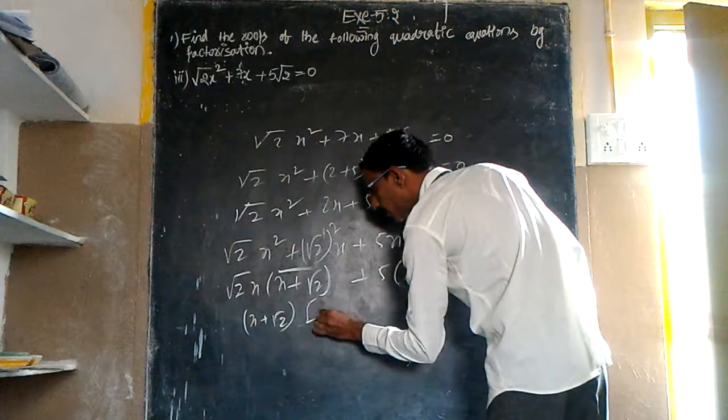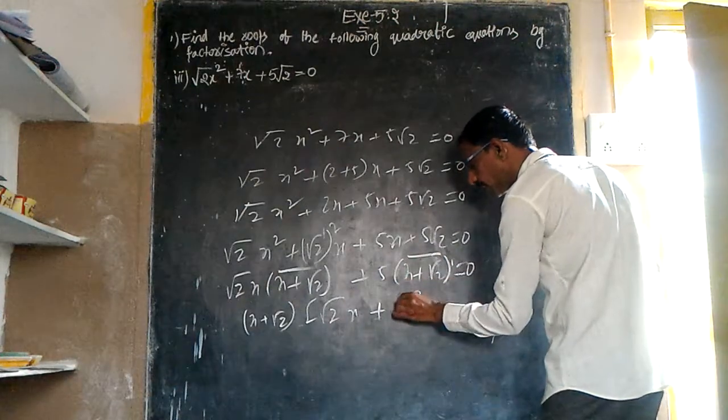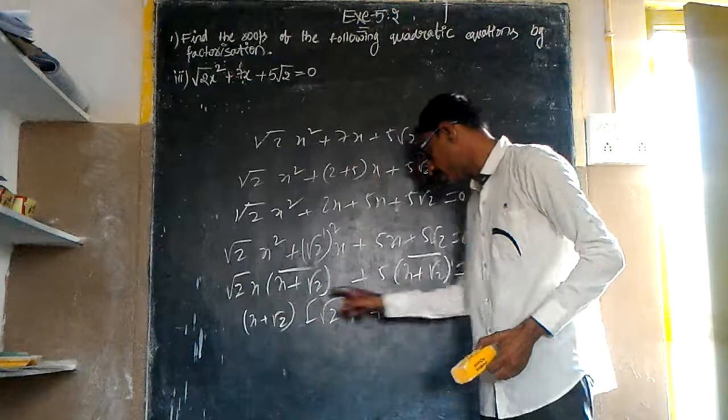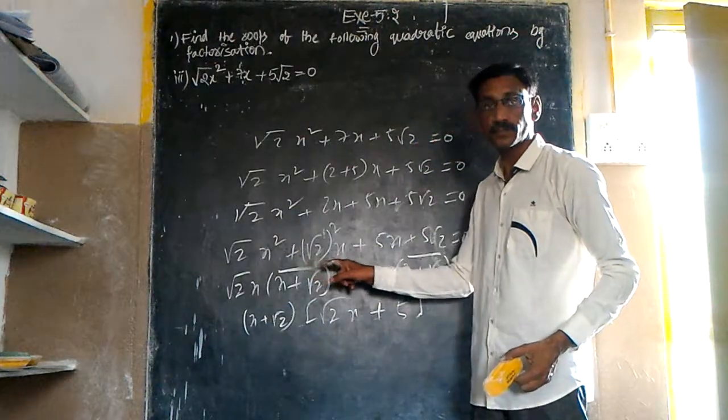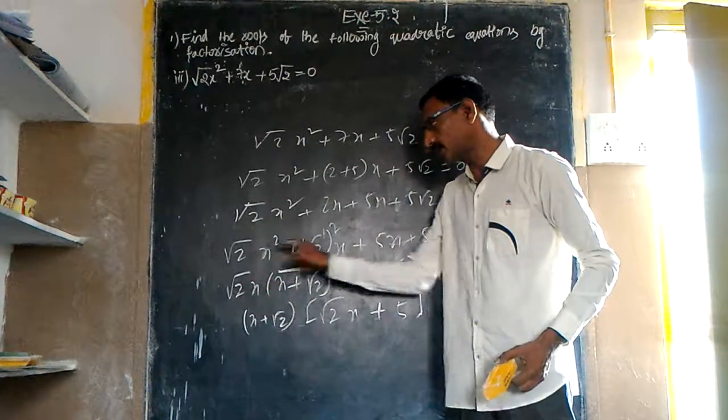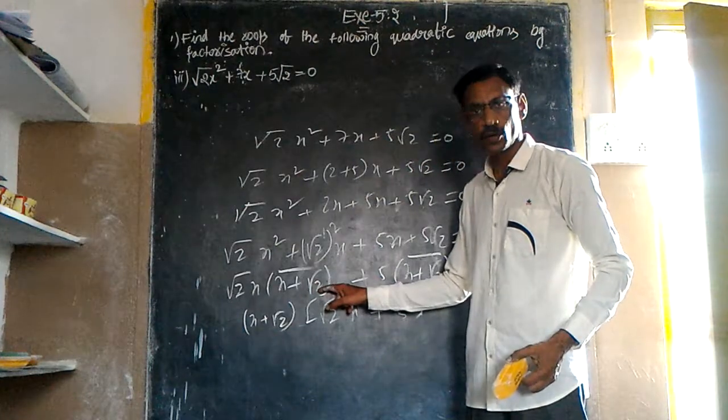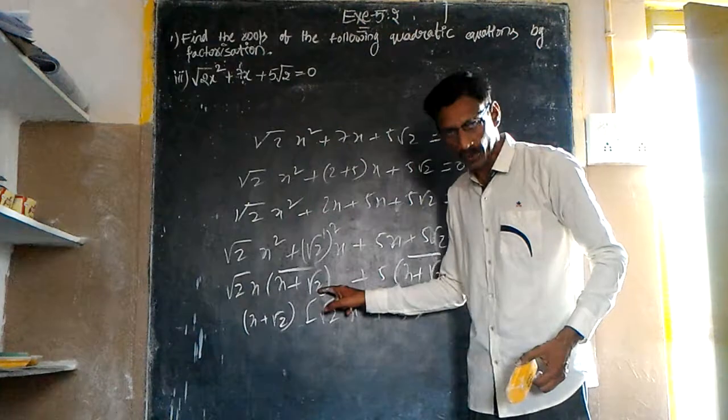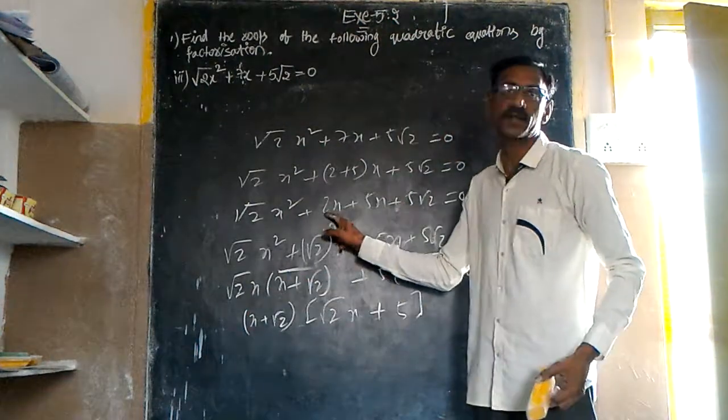Here we have √2x + 5. √2x and 2x are the same. So now product equals to 0 because any one is 0.